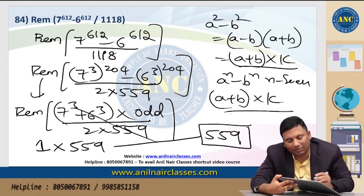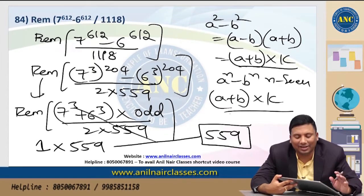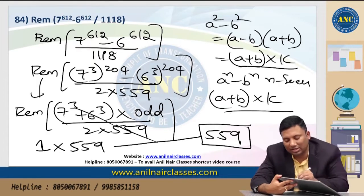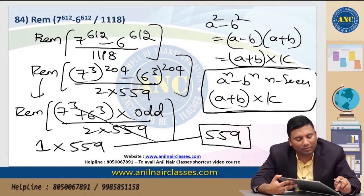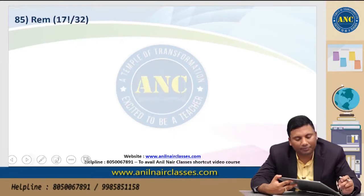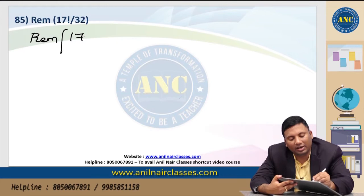The answer for this question is 5159. Idea clear? It is easy if you know the concept of a^n minus b^n. Next: Reminder 1 — 17 factorial divided by 32.